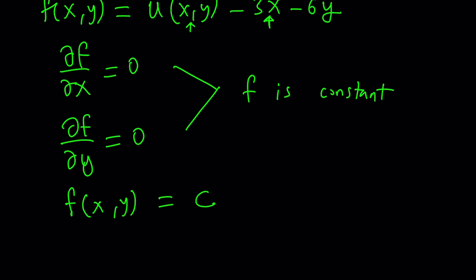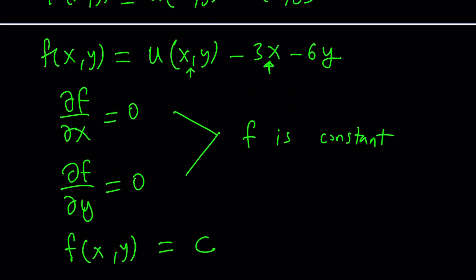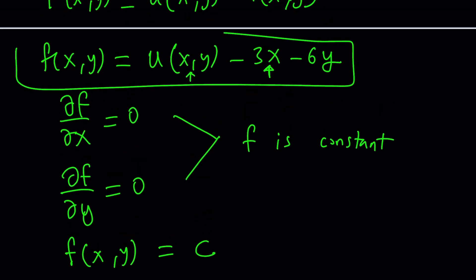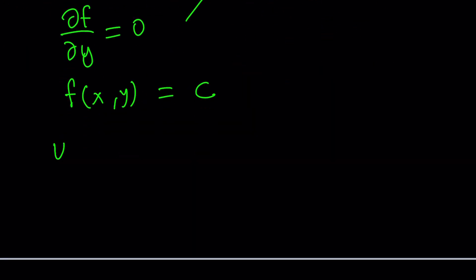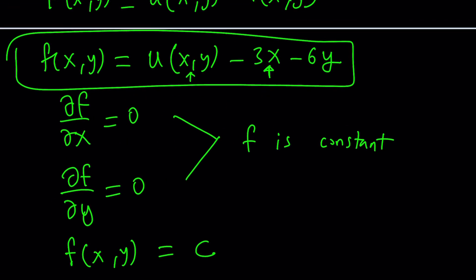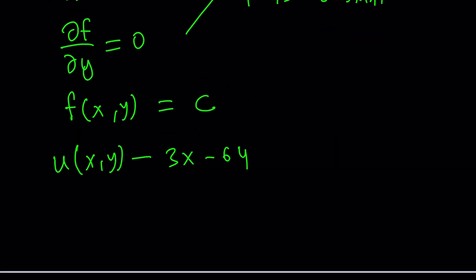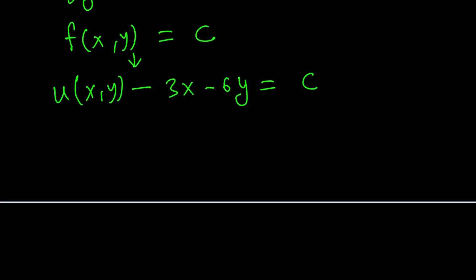And then, since we already knew that f is equal to u minus this, we had another equation that ties f and u and v together. So now, we can go ahead and set u(x,y) - 3x - 6y equals f, which is a constant. And from here, we can isolate u.